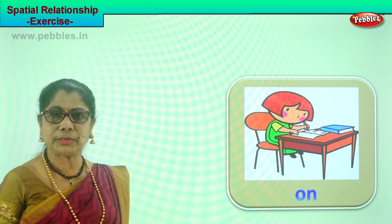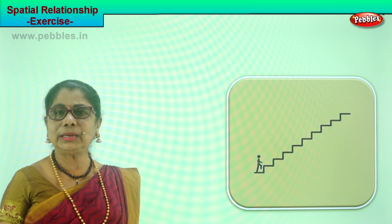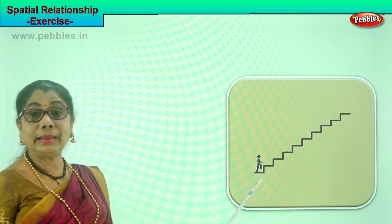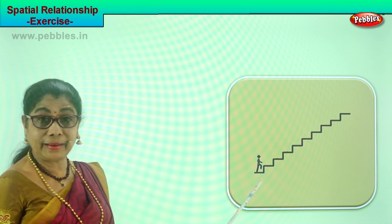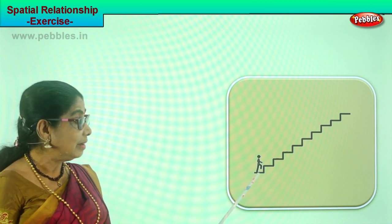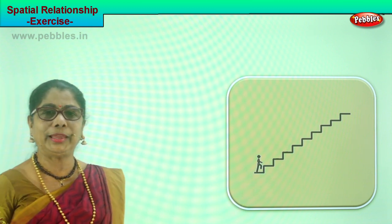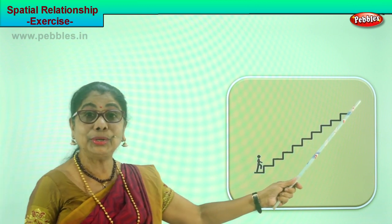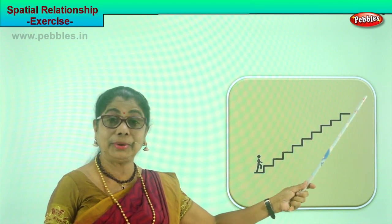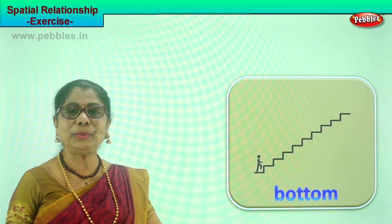Shall we look at another picture? What is the little child doing? Where is he? He is there at the bottom of the stairway, right down here. Where is he going? He will climb and go to the top of the stairway — up, or the top of the stairway. Now where is he? He is at the bottom of the stairway.